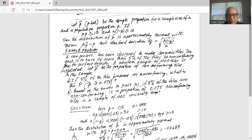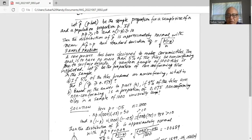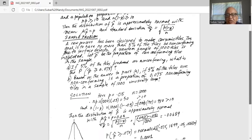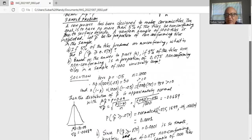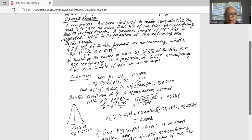Thus the distribution of p hat is approximately normal by Central Limit Theorem for Proportions with μ p hat equal to p equal to 0.05, and σ p hat, which is the standard deviation of the sampling proportion, sometimes also called standard error, is square root of p times 1 minus p divided by n, or square root of 0.05 times 0.95 divided by 1000, which equals 0.00689.